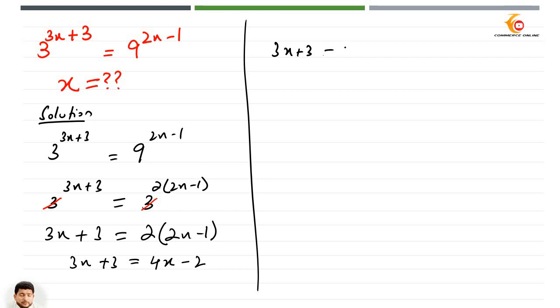We have 3x plus 3 equals 4x minus 2. Now, 4x minus 3x and 3 plus 2, so 5 equals x. That is the answer.